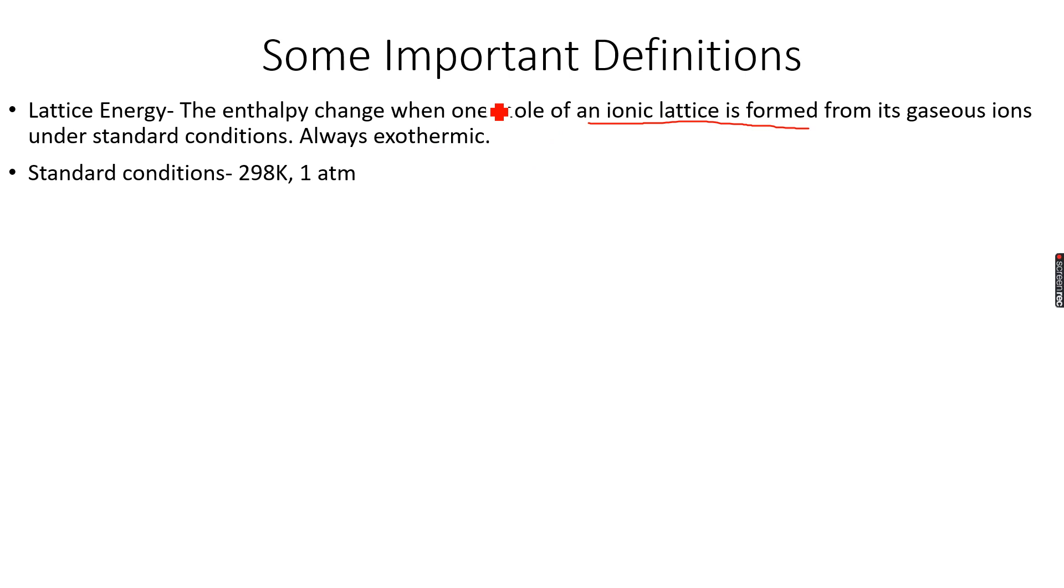Bond formation is exothermic, which means energy is released when bonds are formed, and bond breaking is endothermic, which means energy is taken in when bonds are broken. Obviously, we have to give energy to break the bonds. Therefore, bond forming is exothermic, and bond breaking is endothermic, and since we are talking about the formation of an ionic lattice.